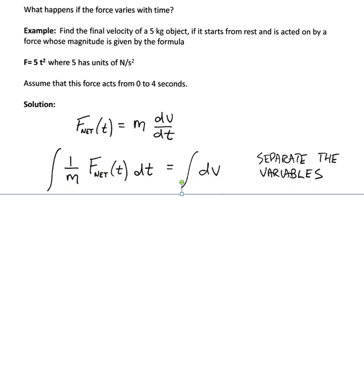So, the first step in any problem like this is to separate the variables. What we do is move any terms that have time onto the left and keep any terms that may have velocity on the right. In this particular case, we could factor out the m by dividing both sides by m. Now, m does not depend on time, but often times it's placed on that side of the equation.